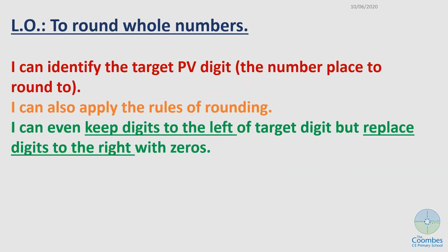There are three success criteria that will help you to round whole numbers. First, that you'll be able to identify the target place value digit. Second, that you can also apply the rules of rounding. Third, that you can keep digits to the left of the target digit, but replace digits to the right with zeros.